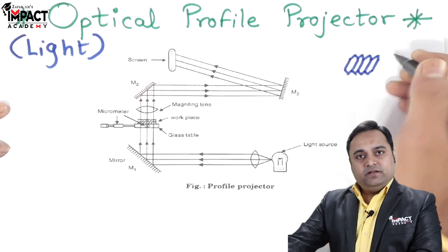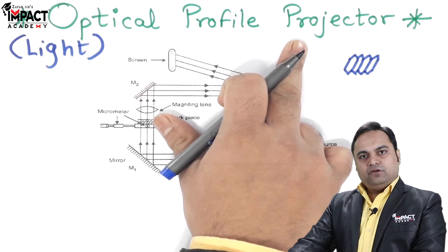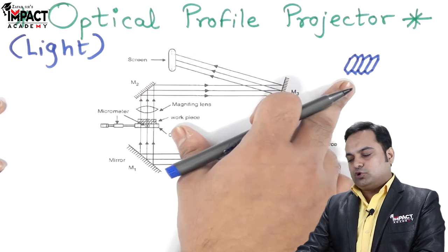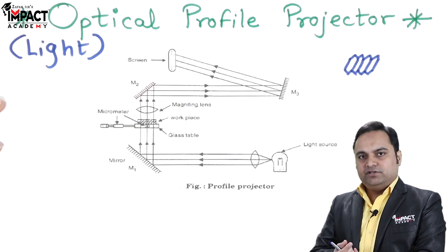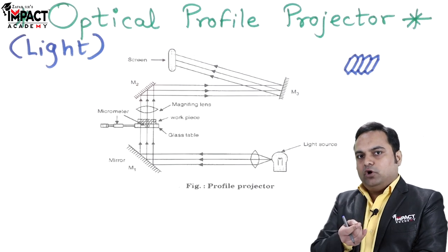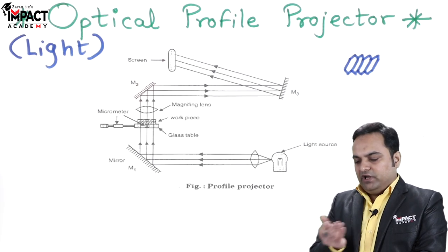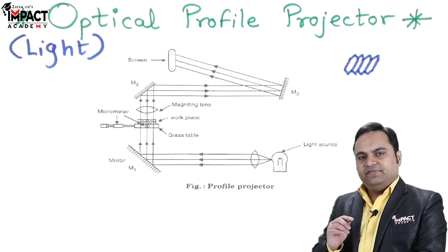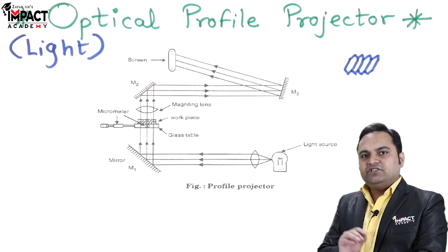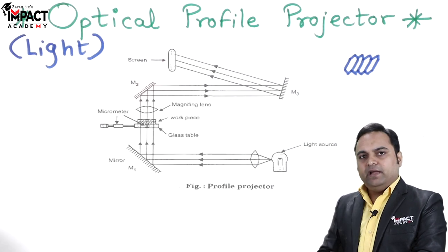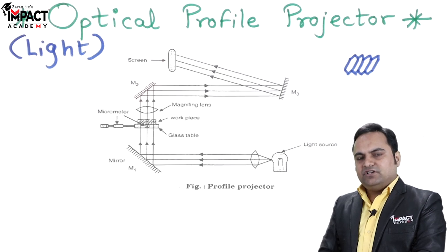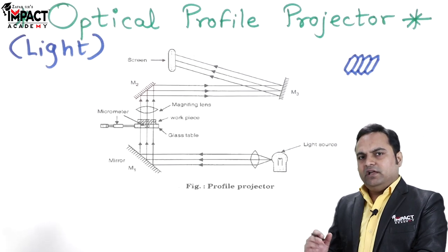The optical profile projector isn't used only for screws; it can be used for gears which are very small. To check defects, we use the optical profile projector. We can only find major defects because this is not a measuring device; it just shows us the image of the object.